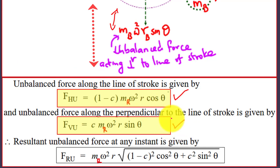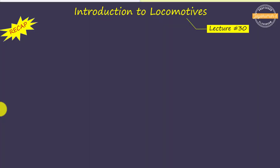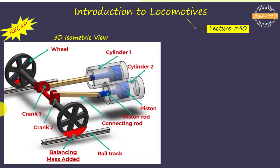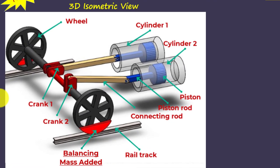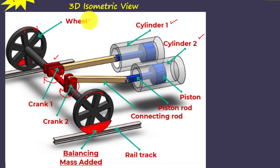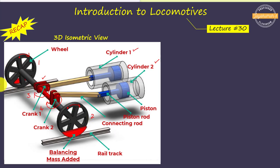Similarly, by using the formula C × m × ω² × R × sinθ, we can determine the unbalanced force perpendicular to the line of stroke. In the previous video, we presented an introduction to locomotives, including a 3D isometric view of the two-cylinder locomotive. We have two identical cylinders — cylinder 1 and cylinder 2 — and two cranks. These two cranks have an angle of 90 degrees with each other. We have rotating unbalanced forces in wheel 1 and wheel 2, and unbalanced forces due to reciprocating and revolving parts in crank 1 and crank 2, giving unbalanced forces acting in all four planes.